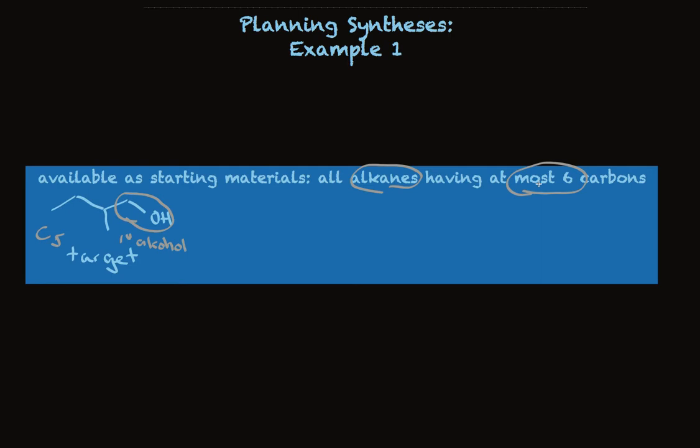So in our first three steps, noticing the functional groups, seeing how big the target is, and comparing it to the molecules that we have to start with, we already see that we can rule out the need to make carbon-carbon bonds and we need to think of ways to make primary alcohols.